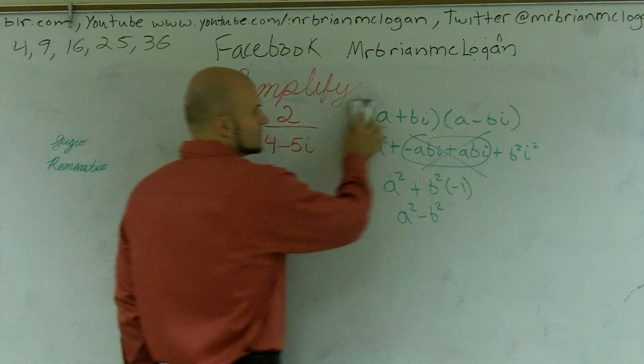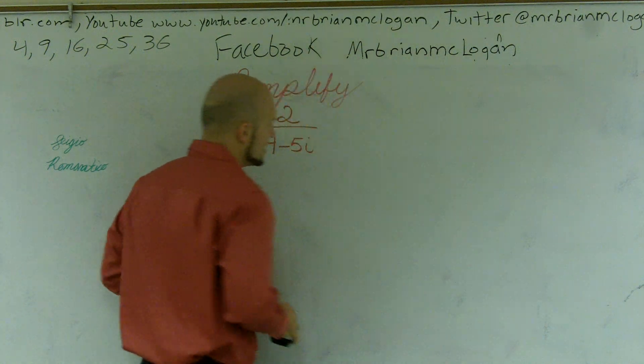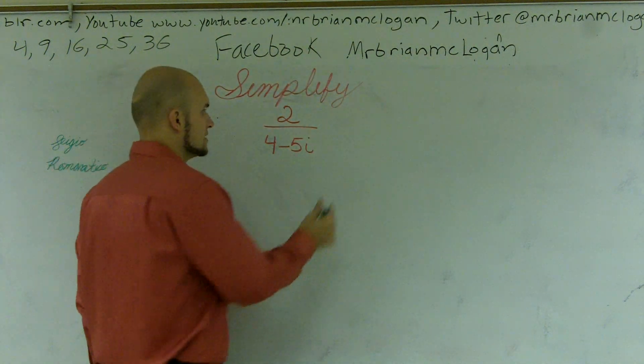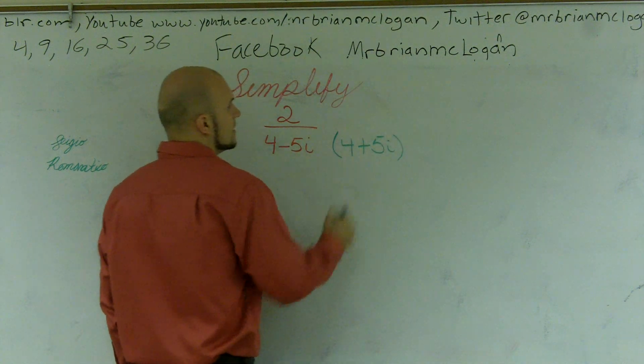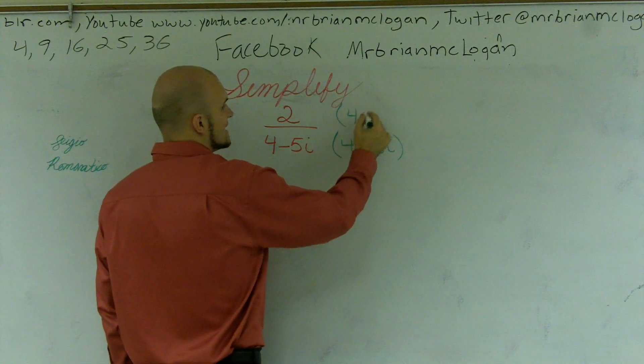So what I'm going to do to get rid of this on the bottom, I'm going to have to multiply by our conjugate pair, which would be 4 plus 5i. And I do that on the bottom and on the top.